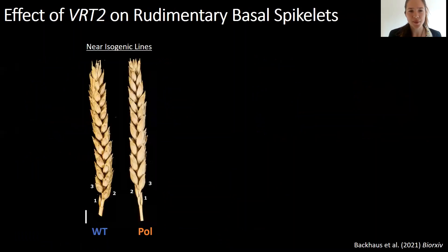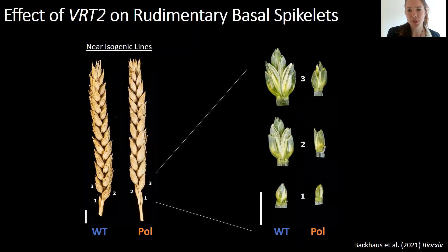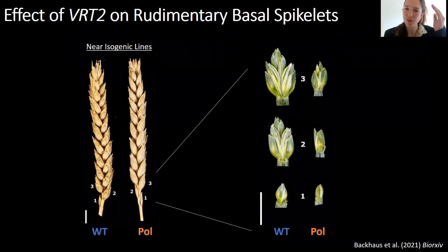So why could that be? Taking a closer look at the spike of the near isogenic lines, we found that the number of rudimentary basal spikelets is increased by one or two. And here you can see in more detail that spikelet fertility is always lower at the base in the wild type. However, it increases very rapidly from the first to the second to the third basal spikelet, and this fails to happen in polonicum.